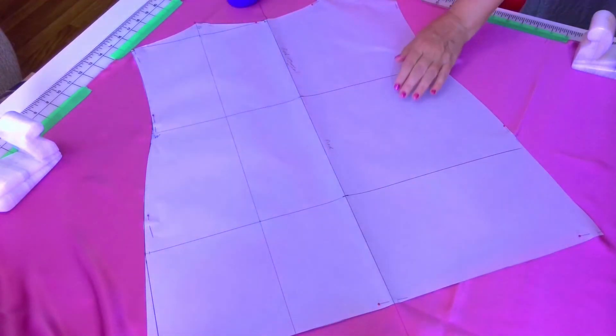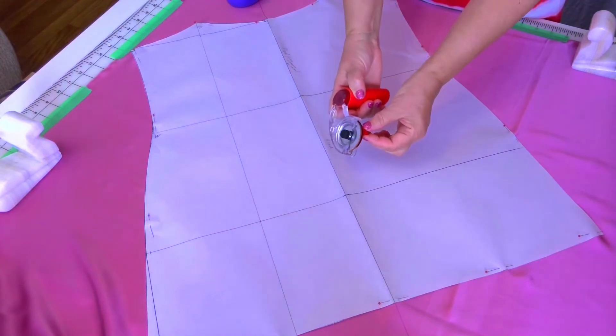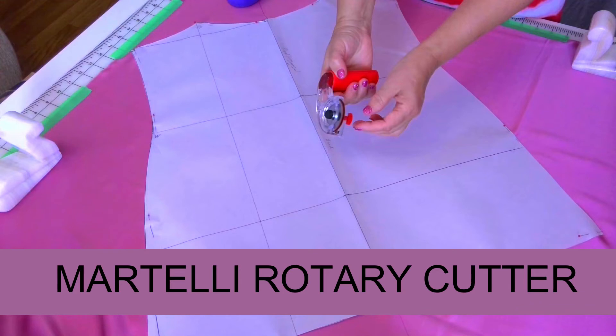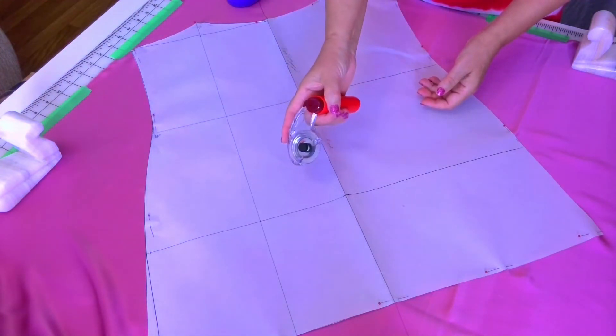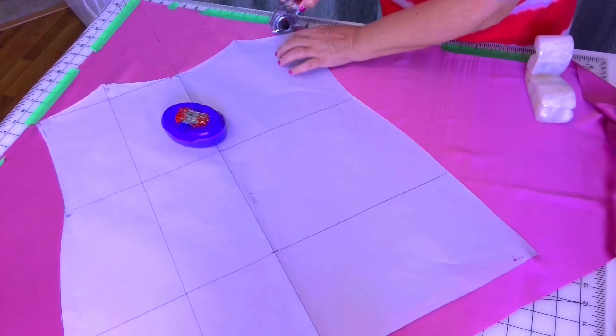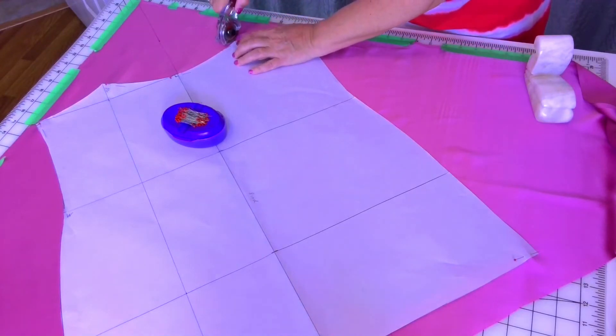Now everything is ready to cut the fabric for a bias cut garment. I don't trace the pattern with a fabric marker. I just cut it with my Martelli rotary cutter. I suppose to hold this rotary cutter like this with one finger on the wheel. But this position is not comfortable for me. I control the rotary cutter much better when I hold it normally. Place some pressure on the rotary cutter so it cuts nicely.